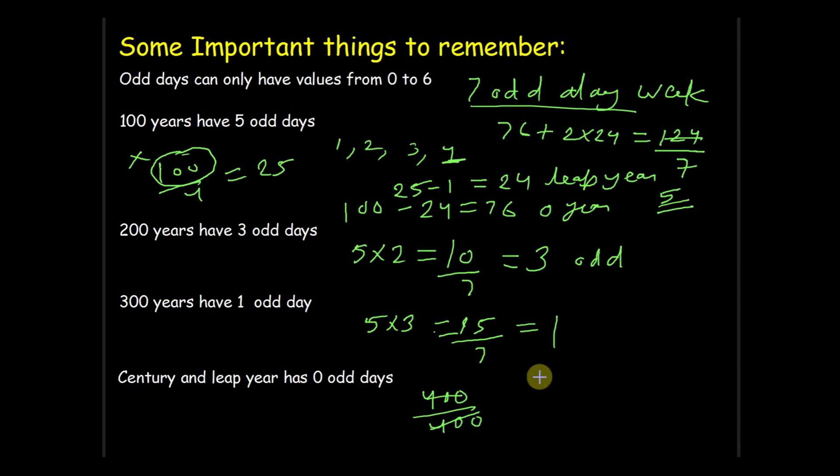And how can we calculate it? See, we know 200 years have 3 odd days, then for 400 it is 3 multiply by 2 which is equal to 6. And also it is a leap year so there will be one more extra day. So we'll add this extra day also, so we got 7 odd days. And after converting it in weeks there is 0 odd days.